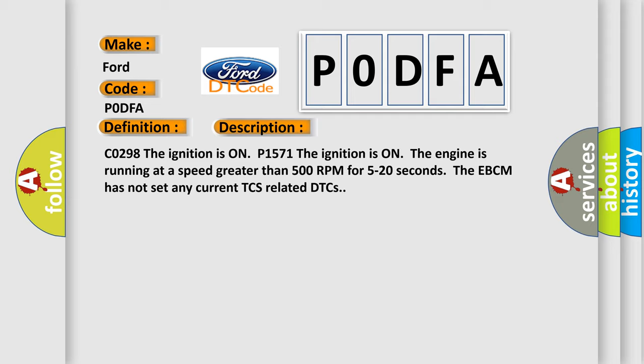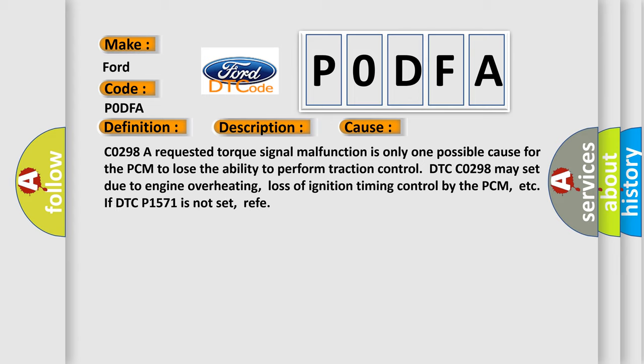This diagnostic error occurs most often in these cases: C0298, a requested torque signal malfunction is only one possible cause for the PCM to lose the ability to perform traction control. DTC C0298 may set due to engine overheating, loss of ignition timing control by the PCM, etc. If DTC P1571 is not set, refer.